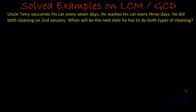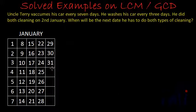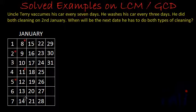To understand it better, let me make a calendar of January. January has 31 days. Uncle Terry vacuums his car every 7 days and washes his car every 3 days. He did both cleanings on 2nd January. So if he washes his car on 2nd January, he washes again every 3 days — on 5th, then 8th, then 11th, then 14th. Every 3rd day he is washing.